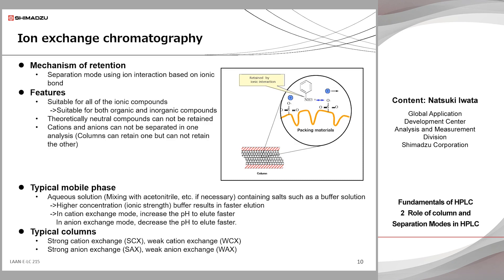In addition, the types of stationary phases are sometimes categorized into strong or weak anion exchange and cationic exchange. The strong ion exchange is the separation mode in which the stationary phase is always charged regardless of the mobile phase pH. The weak ion exchange is a separation mode in which the dissociation and suppression of the stationary phase can be controlled by adjusting the mobile phase pH. In other words, the presence or absence of the charge can be controlled in the weak ion exchange mode.